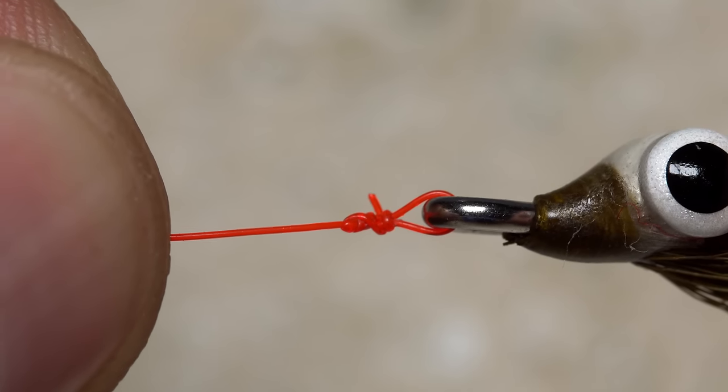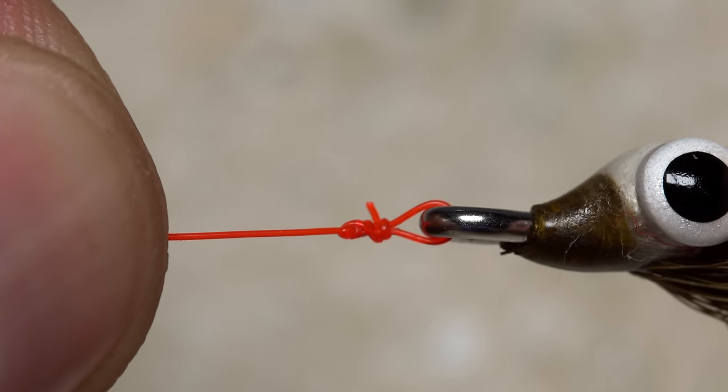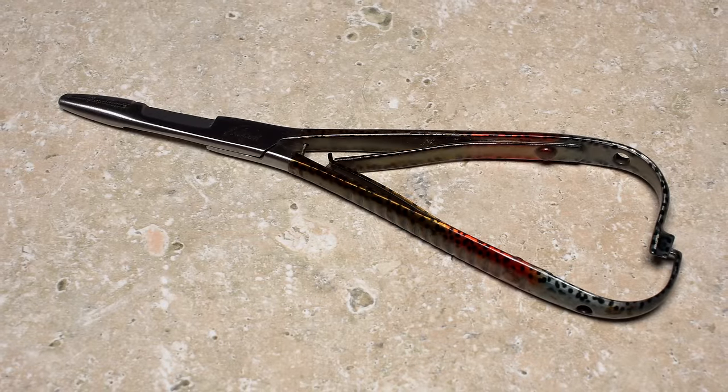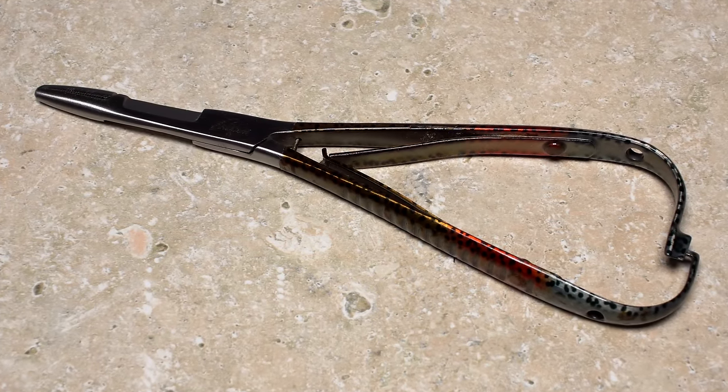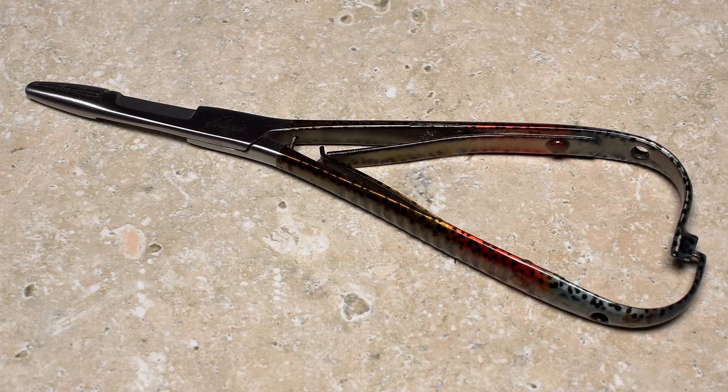Here's a cool trick to get you tying non-slip loop knots like a pro. The key to success is a versatile little tool called a mitten scissor clamp. It has numerous advantages over forceps and hemostats.